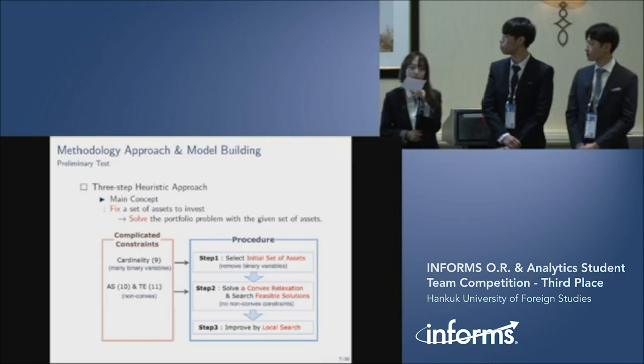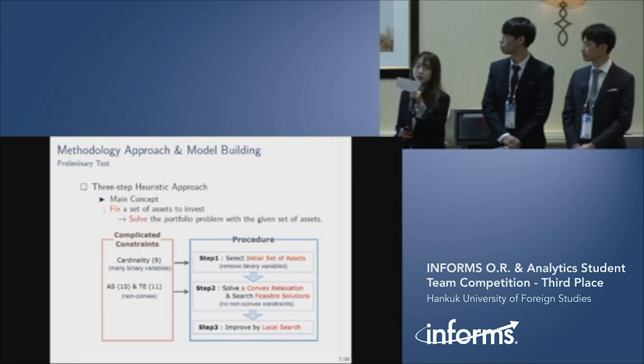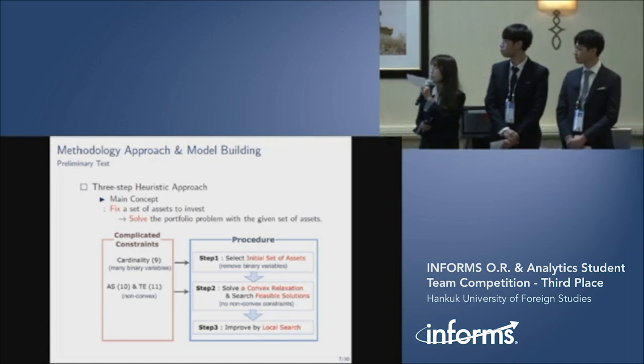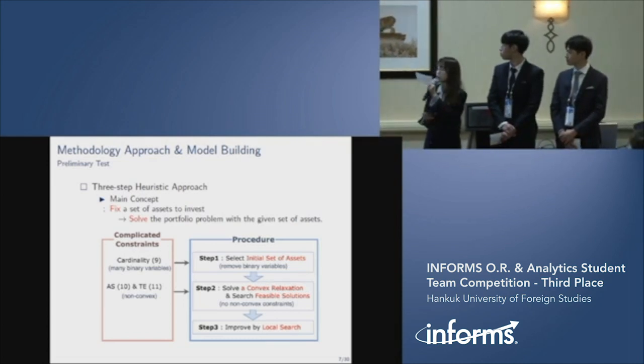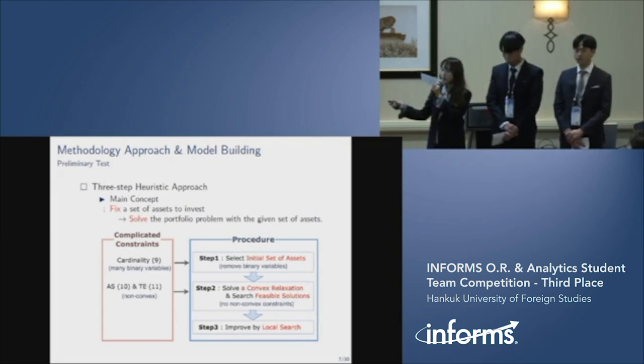Based on the observations, we could consider a three-step heuristic approach. The main idea is that we fix a set of assets to invest and then we solve the portfolio optimization with the chosen assets. In step one, we select initial set of assets. This process can replace a cardinality constraint.